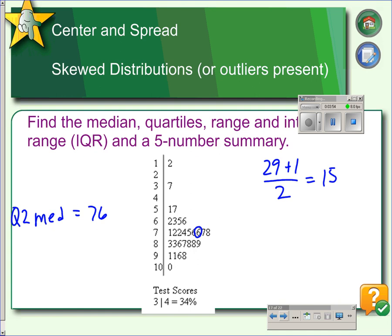Then to find the first quartile, we take the lower half of the data set up to the median, and we find the middle of that. So since we have 15 values on the lower half, 15 plus 1 divided by 2 gives us 8. So the 8th data value is the median of the lower half, which makes it Q1. So our first quartile is going to be 66.